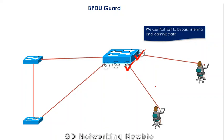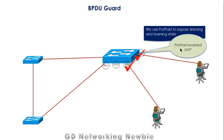The forwarding state is the state where we can forward and receive data frames. In this network we have three switches running STP protocol in a stable state, and we have enabled PortFast on this port of this switch and connected our computer.